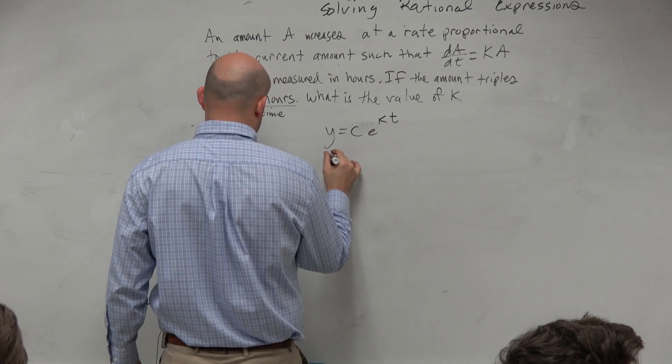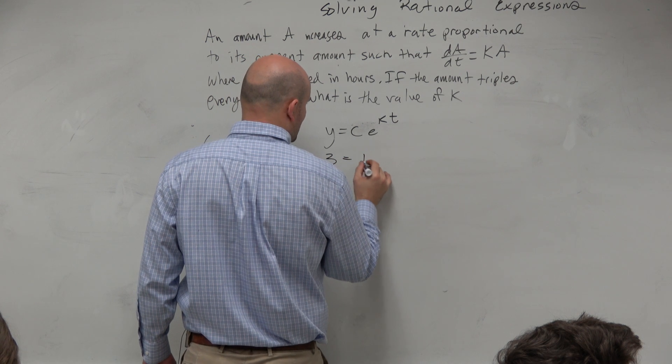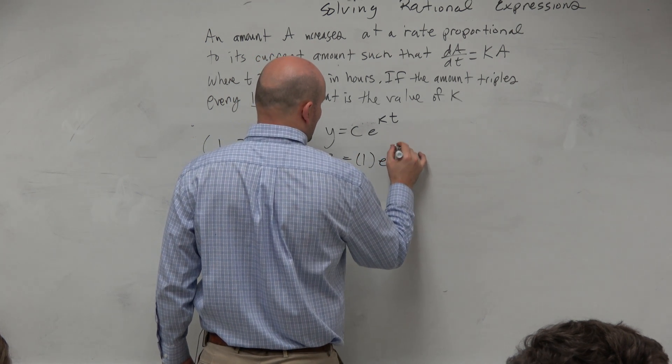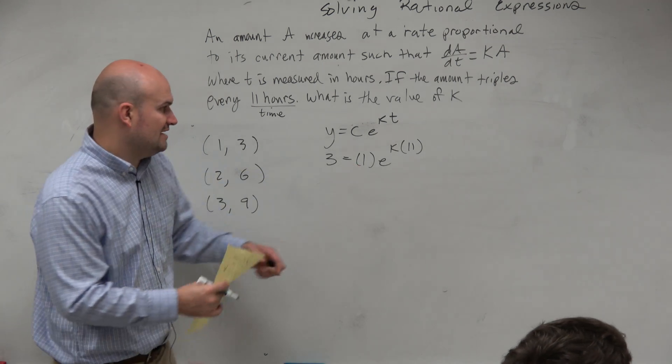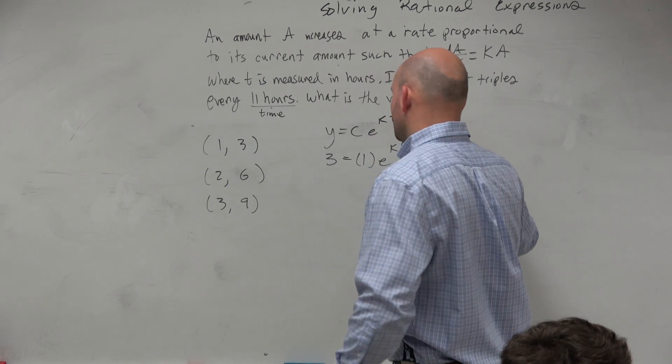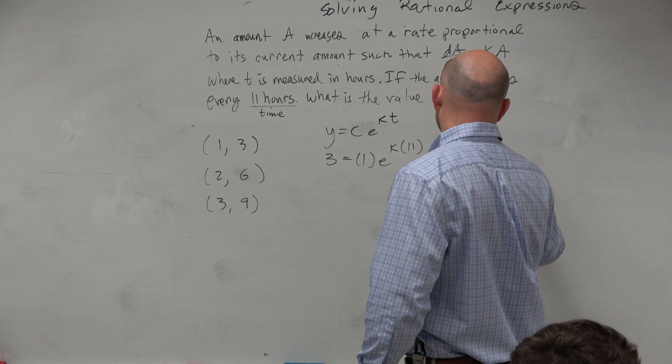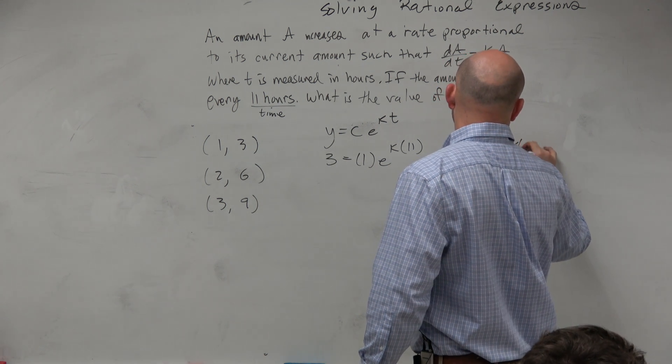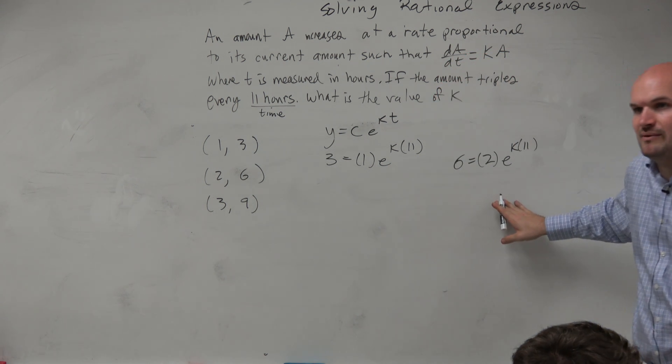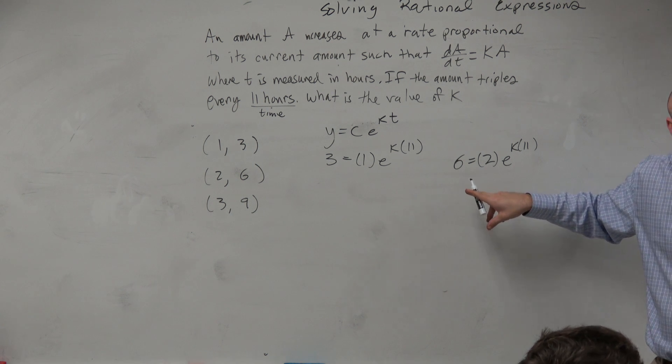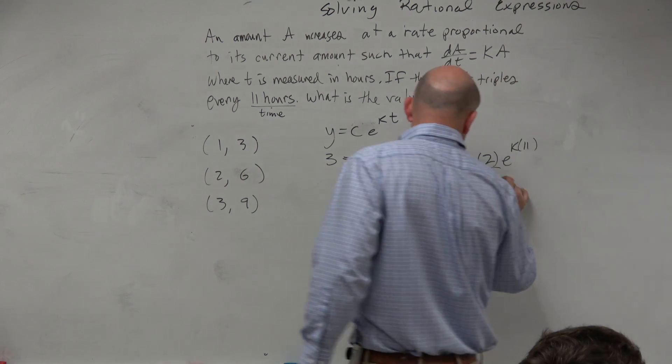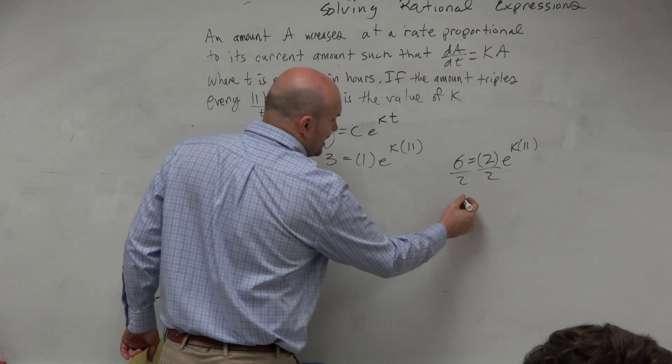And you'll see why it doesn't matter here in just a second. So if I say that's going to be 3, 1, e to the k times 11, what is the first step you would do anyways, guys? Even if this was, let's just do this as 6, 2. What's the first step you do anyways? Divide by 2. And you're going to get what? Answer anyways.